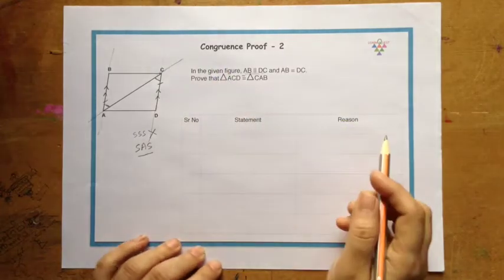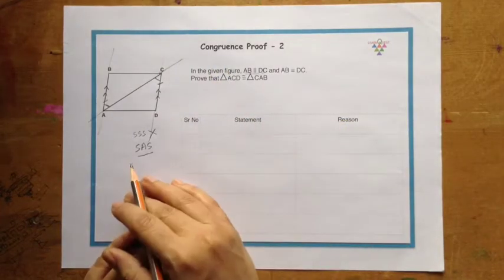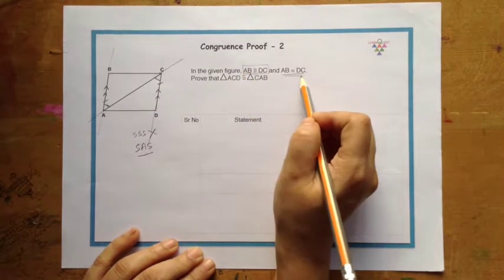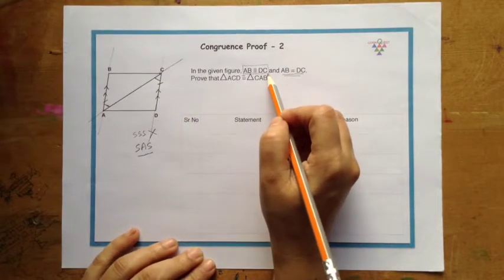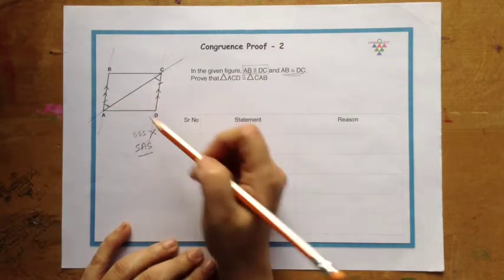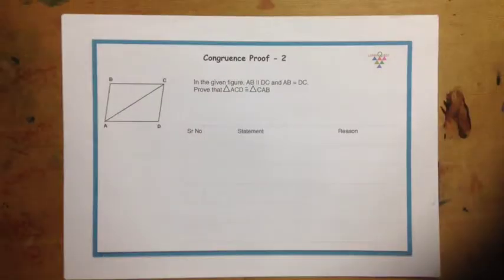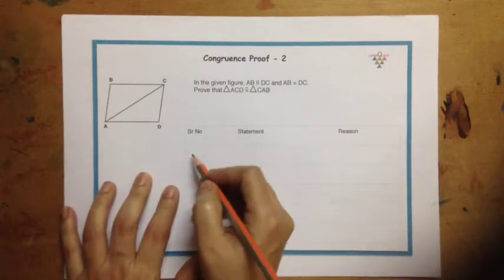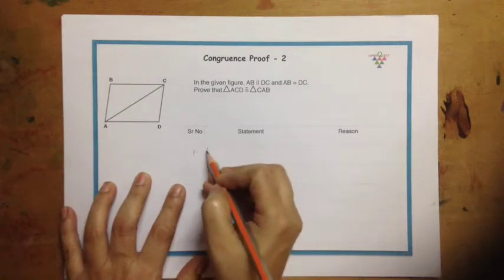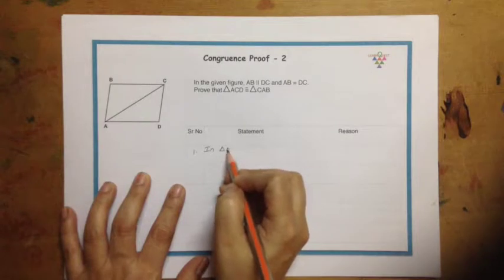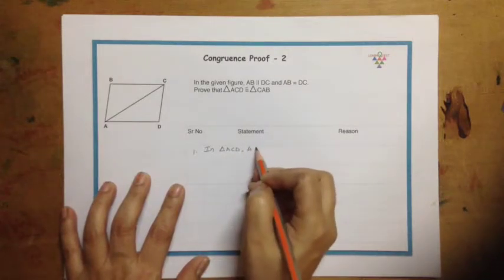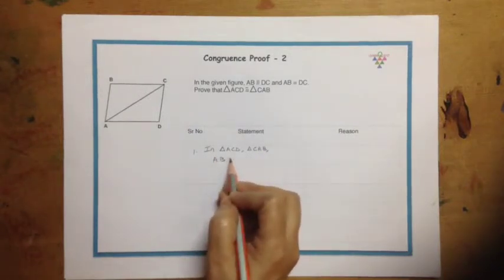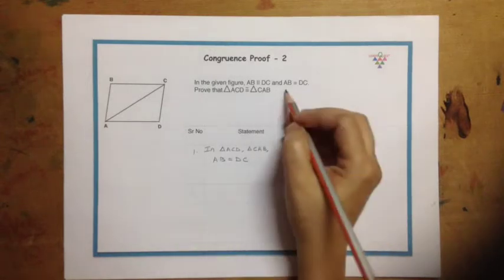So let us write this down in the proof. Remember that whenever you are given information like this, of course this is direct, but this is an indirect hint that from this we can figure out that two angles are equal. So let us begin the proof by first writing down what is given. So we will write the first statement that in triangle ACD and triangle CAB, we have AB is equal to DC because it is given.